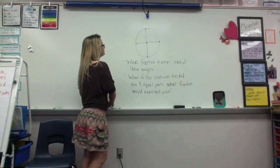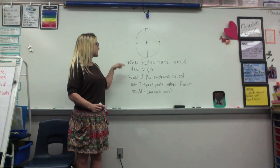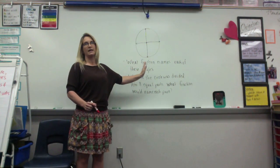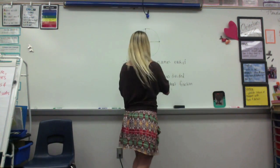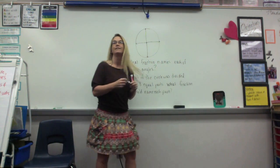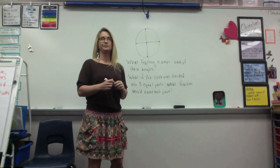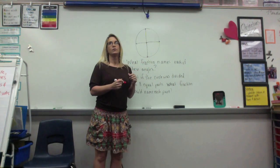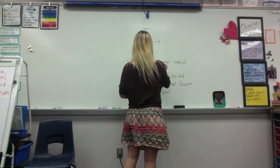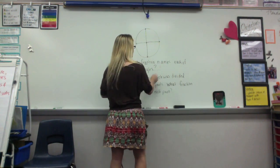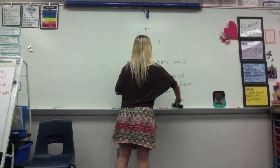Let's look at our circle up here. I've divided it. What fraction names each of these angles? What did you get, Arely? They are all right angles, but that's not what I'm looking for. Bella? One-fourth. That's a fraction. So when I'm looking for a fraction, I'm looking for something like this — a numerator over a denominator.